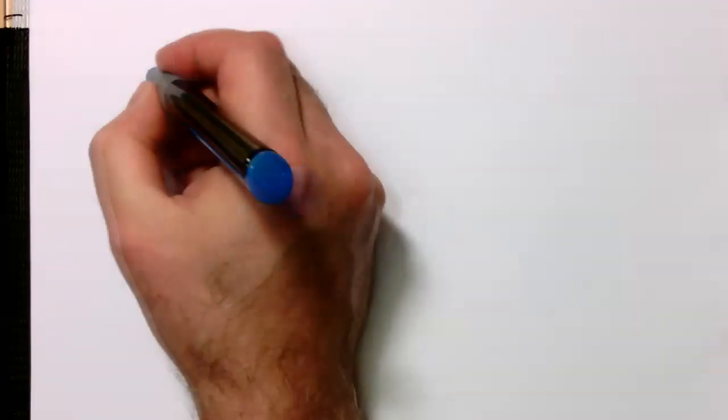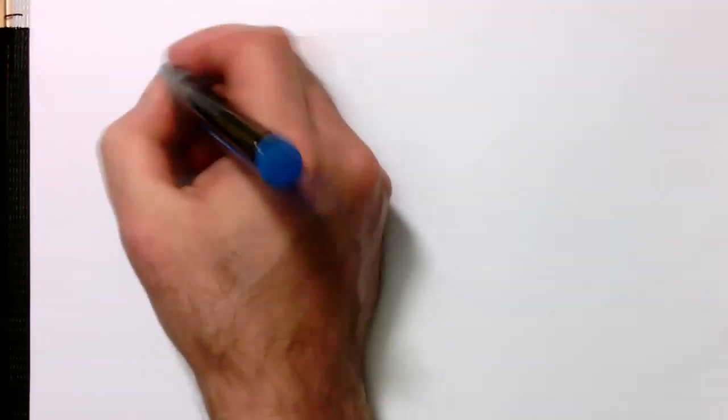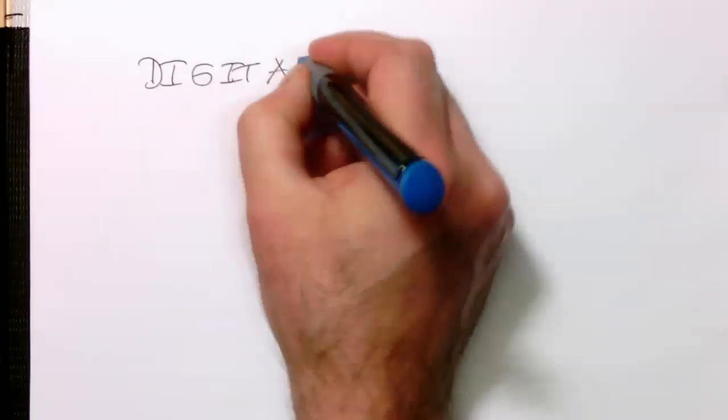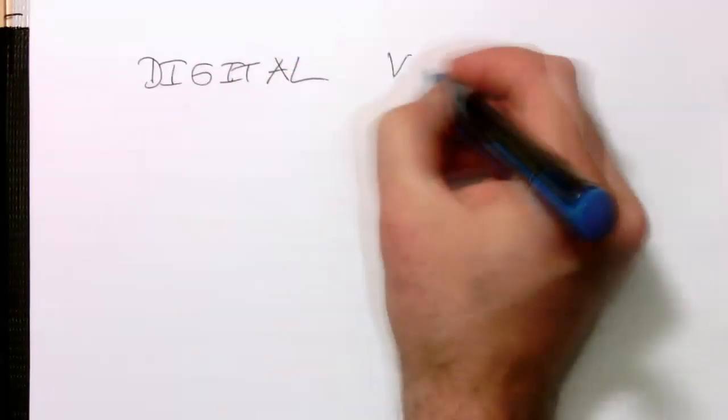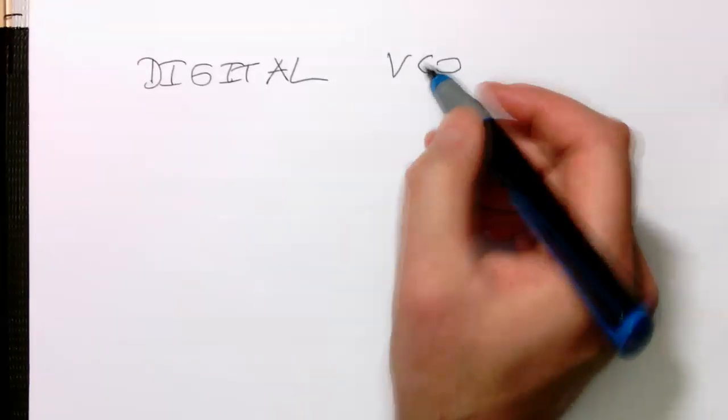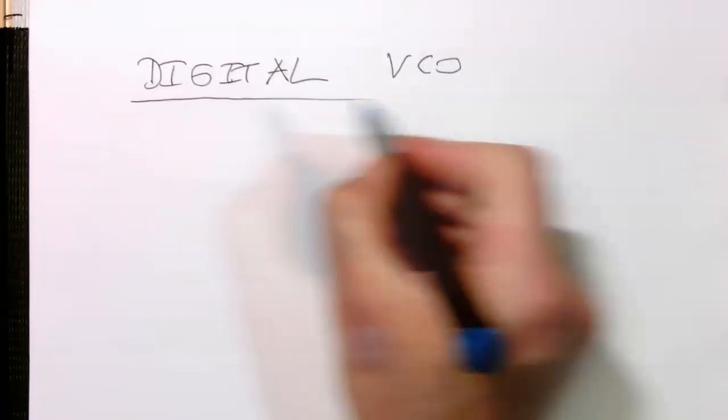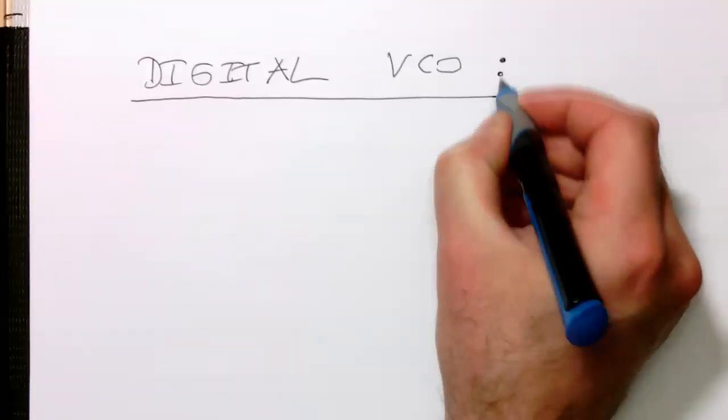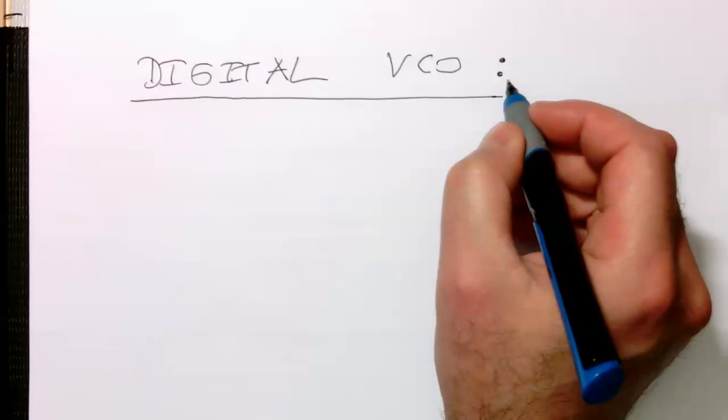Let's first, before we are going into the PLL, let's first look at how do we actually create a digital VCO. Obviously we have no voltage, so we need to somehow control the frequency via numeric value. And so how do we create a VCO?